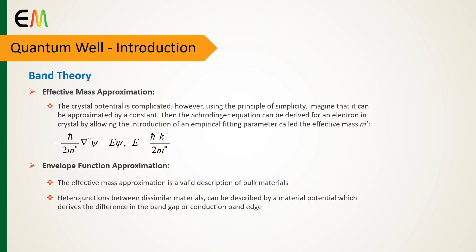And the junctions between similar materials, both of which can be well represented by the effective mass approximation, can be described by a material potential which derives from the difference in the bandgap or conduction band edge.